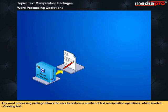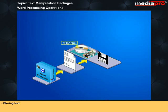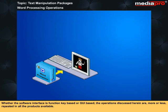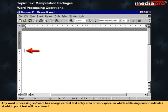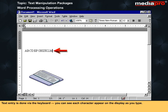Any word processing package allows the user to perform a number of text manipulation operations, which involve creating text, editing text, formatting text, storing text, and printing text. Whether the software interface is function key-based or GUI-based, the operations discussed are more or less repeated in all the products available. Any word processing software has a large central text entry area, or workspace, in which a blinking cursor indicates at which point text will be entered. The most basic functions of creating, storing, and printing are available from the software's main menu. Text entry is done via the keyboard.